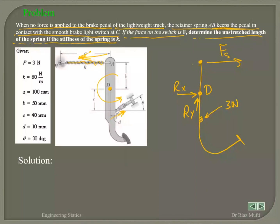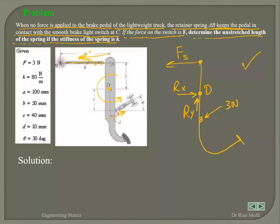If you pull from here in this direction and it's pivoted at D, then you will have contact at the switch. So I am putting Fs in this direction. If you have it in the other direction, it doesn't matter — your answer will be negative, telling you the direction is opposite. Whatever direction you put in your free body diagram, stick to it. The answer will tell you if you assumed it in the right direction or not.